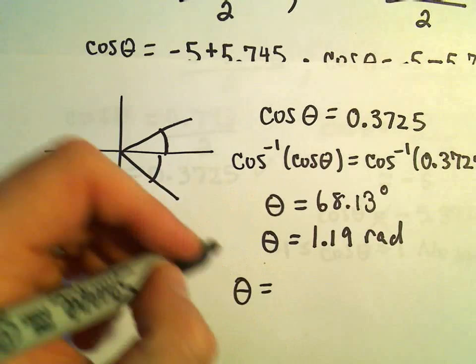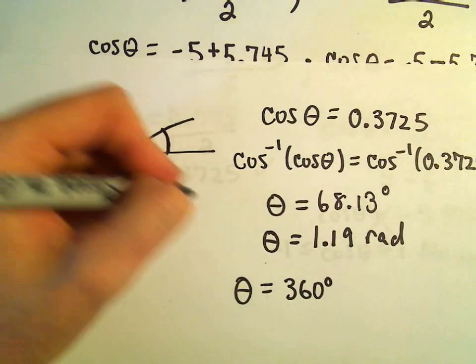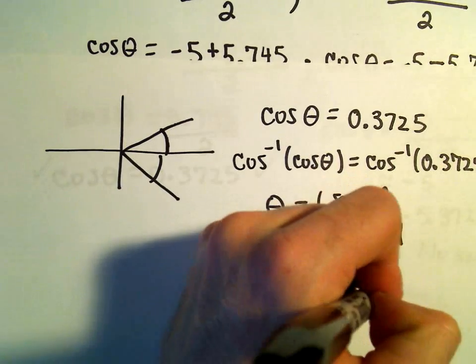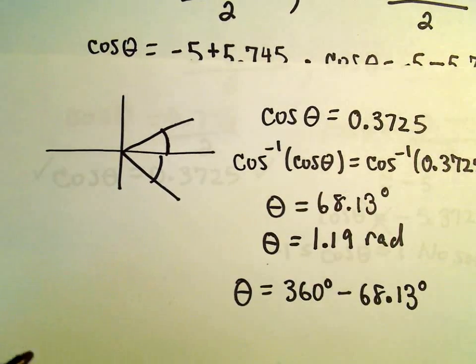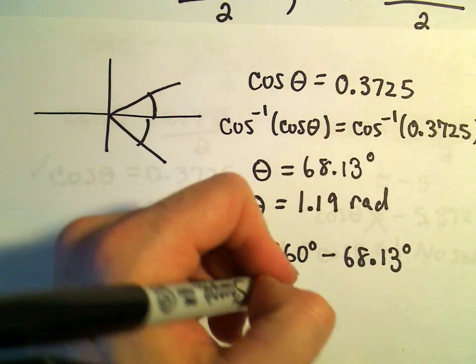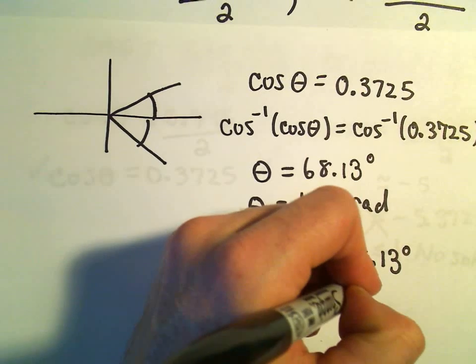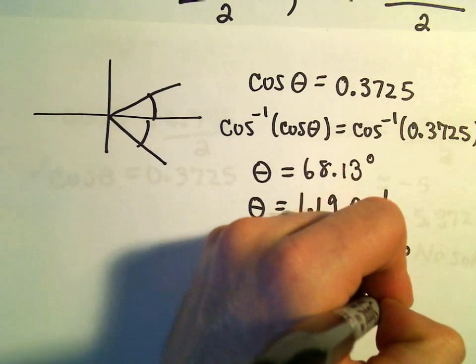To find the other solution in quadrant 4, remember we would simply have to take 360 degrees, which would be 1 revolution, but backtrack 68.13 degrees. Or equivalently, we would have to go around 2 pi radians, but then subtract away the 1.19 radians that we've already traveled.